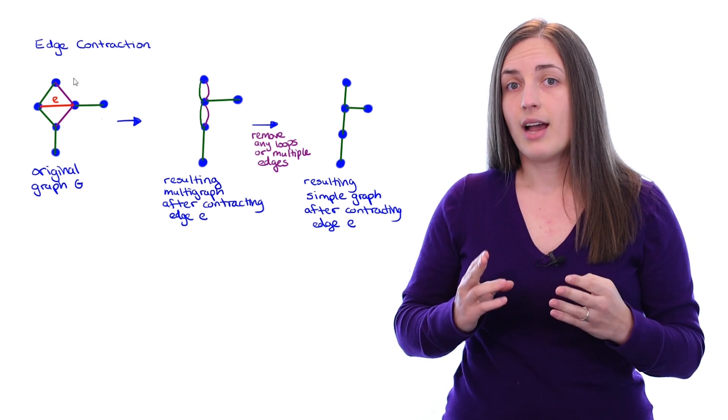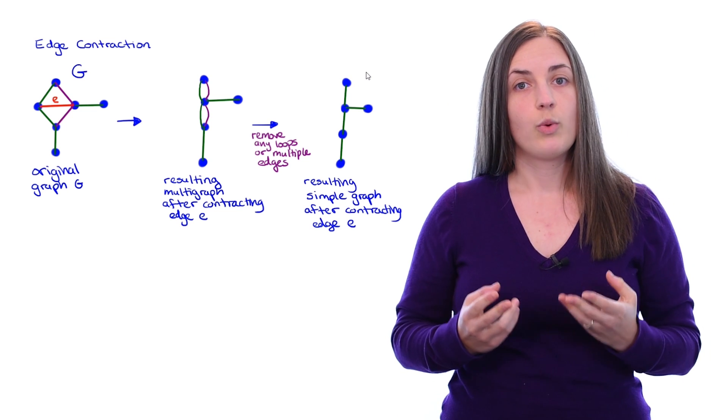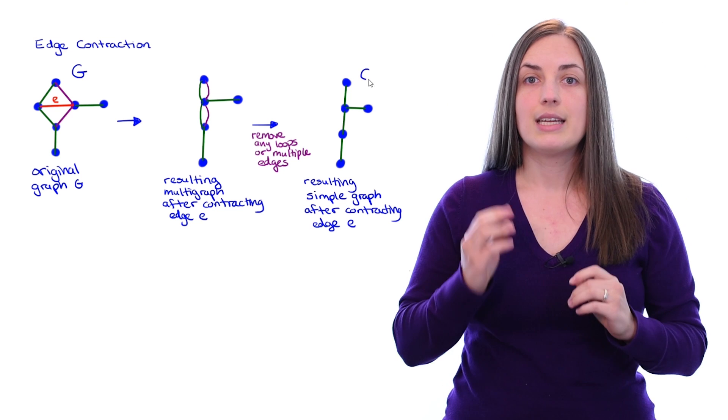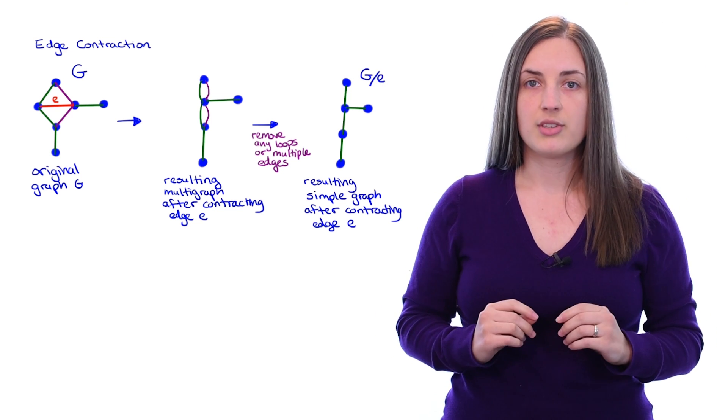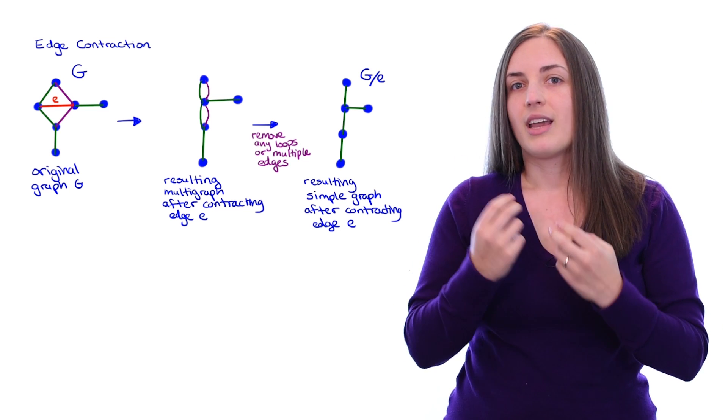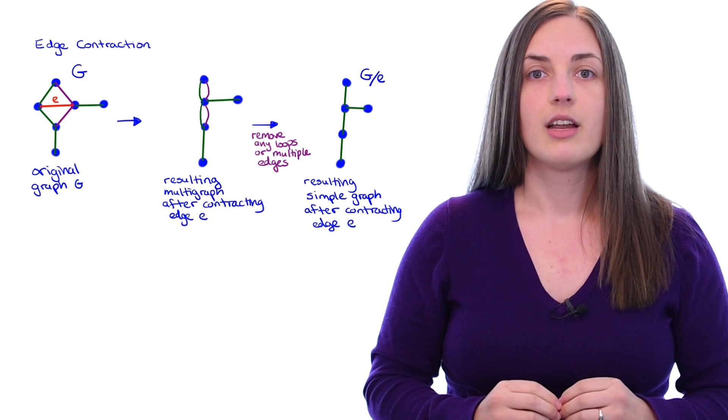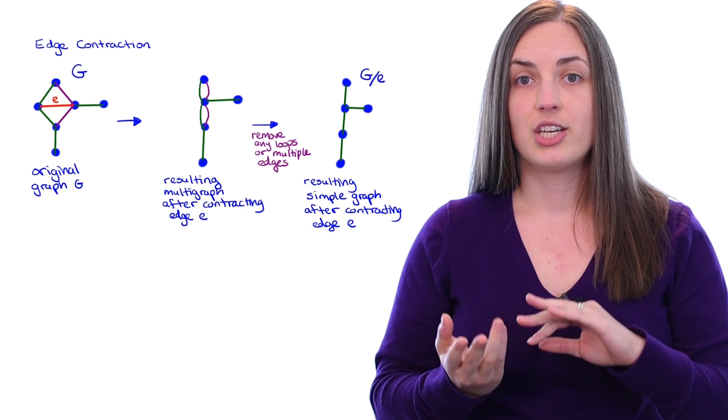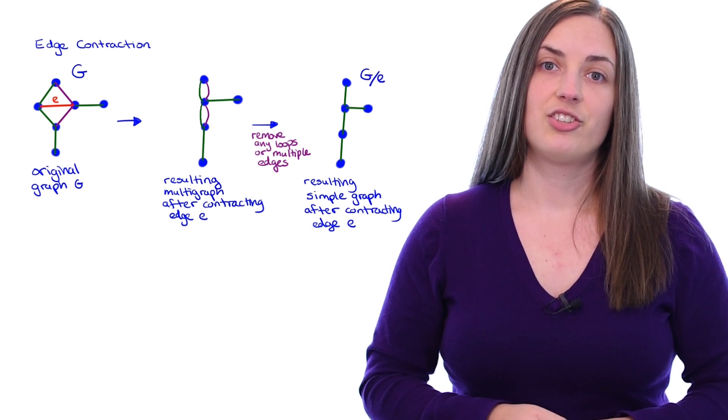When we have a graph G and we've contracted an edge E, the notation we use for the new graph is G with a forward slash E. This can be confusing because G with a backslash E usually denotes a graph with the edge E removed. It's very important to keep the notation clear and not confuse the notation for removing an edge with the notation for contracting an edge.